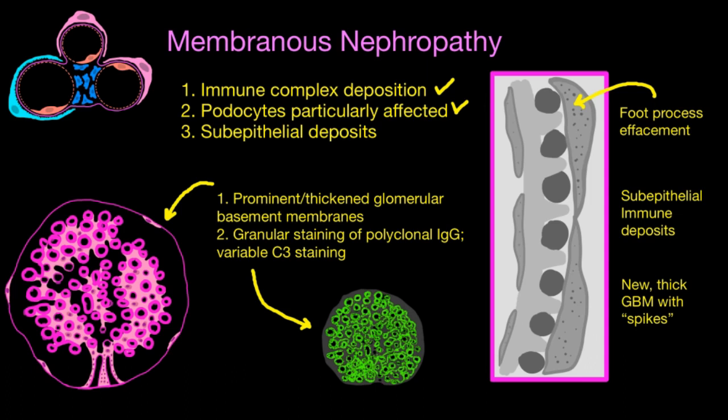What's unique to membranous nephropathy are these subepithelial immune deposits — they're quite electron-dense on EM and form large deposits sitting under the podocytes, which is why we call them subepithelial deposits. There is also a thickened glomerular basement membrane: in response to the deposits and injury, nearby cells lay down new layers of basement membrane, forming spikes in between the deposits. The basement membrane thickens, spikes develop between the deposits, and the deposits just sit there. This is the characteristic EM finding for membranous nephropathy.